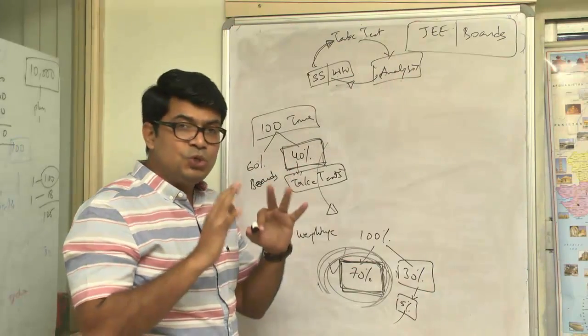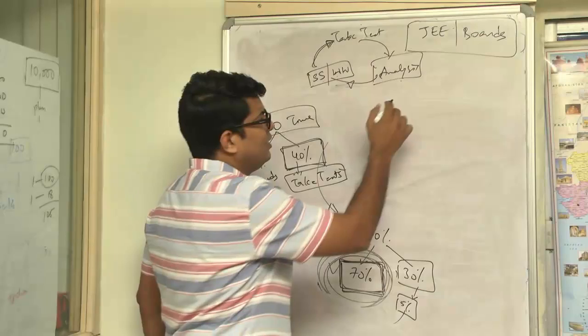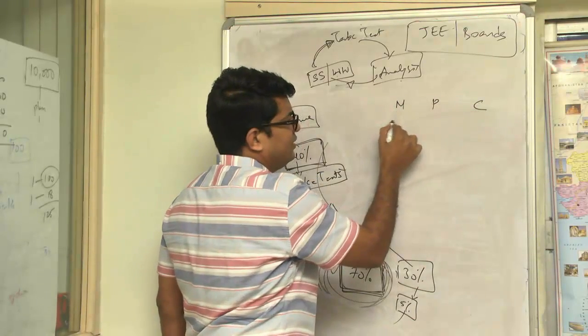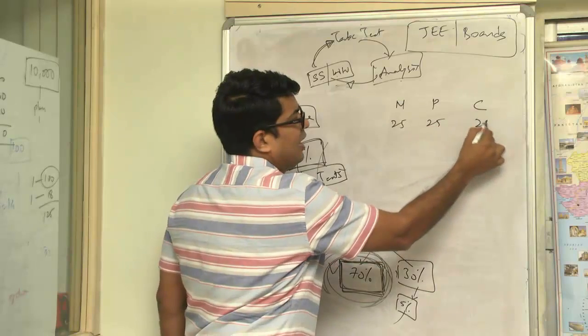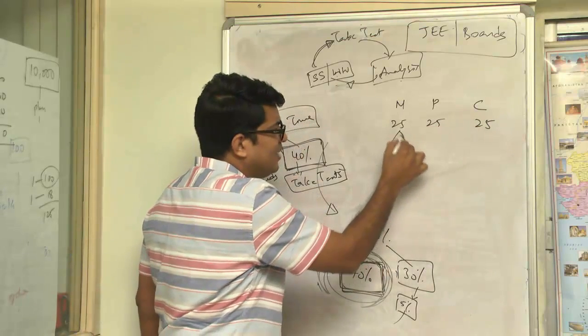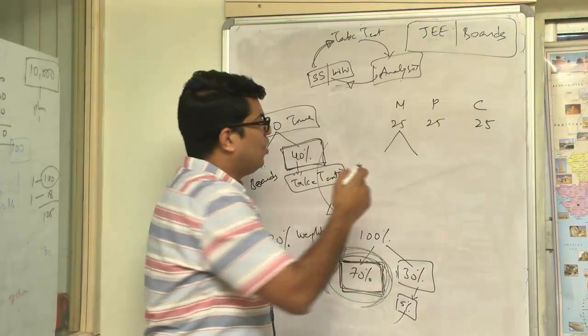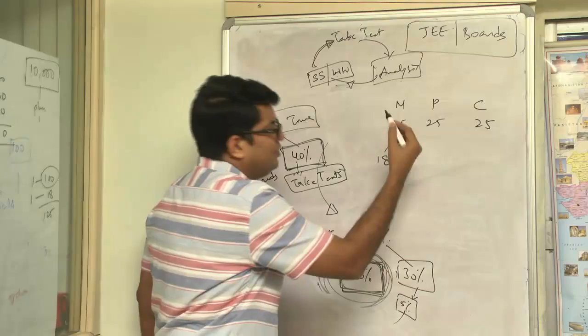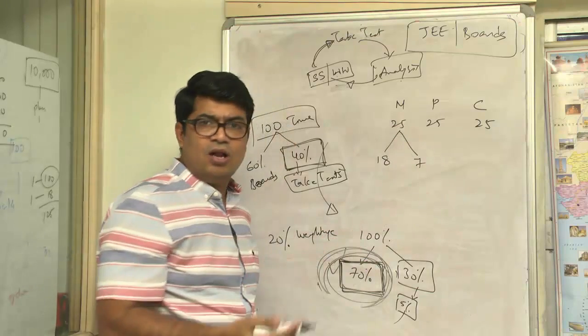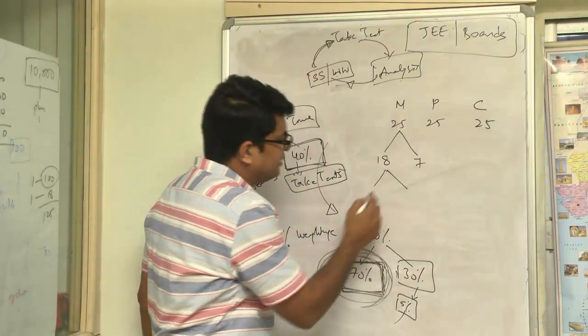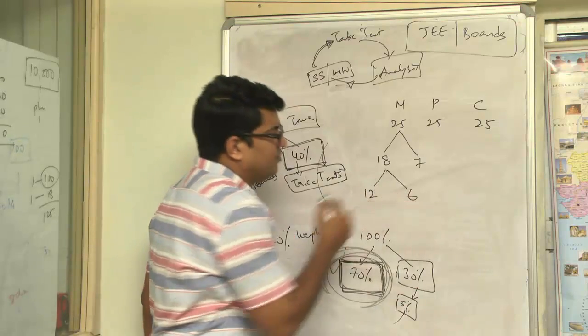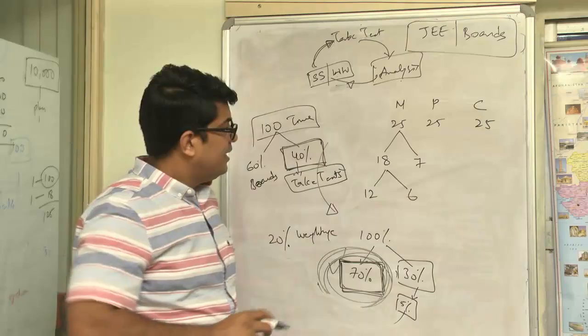Let me show you a simple example. Imagine you have taken a test: maths, physics, chemistry. You have, say, 25 questions each. And out of these 25 questions, in the real time, in a test condition, you got, say, you have attempted 18 questions and you did not attempt 7 questions at all. And from these 18 questions, imagine you got 12 of them right and 6 of them wrong. Right?